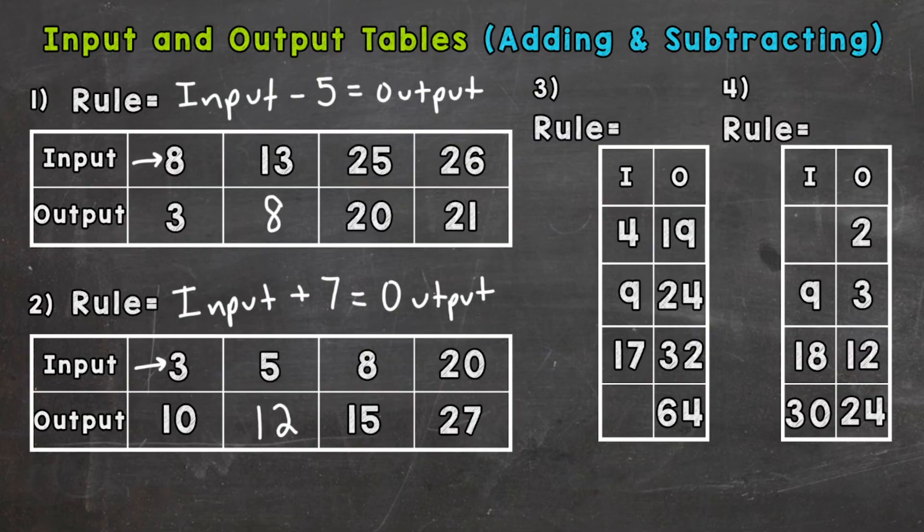So what we can do is we can do the opposite to that 64. We can do 64 minus 15 to figure out what goes there, and the answer is 49. Let's double check: 49 plus 15 is 64. So our rule is input plus 15 equals our output.